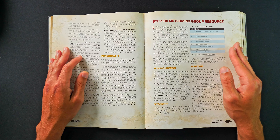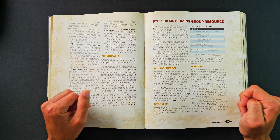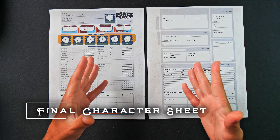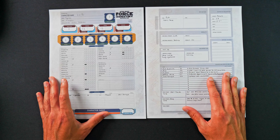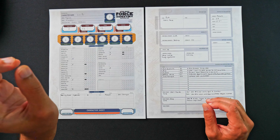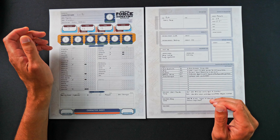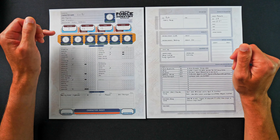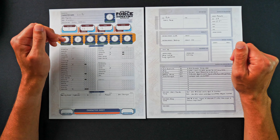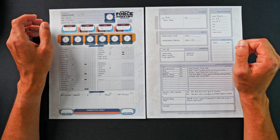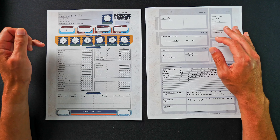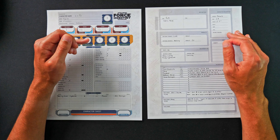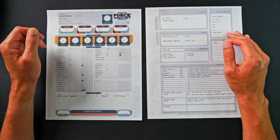That's all there is to creating a character — let's take a look at the character sheet. Here we have the official character sheet for Force and Destiny, just two pages, which is awesome. We have Lin Yule, a Togruta who is a Guardian of the Soresu Defender. Her Force rating is 1, her Soak value is 3, her Wound Threshold is 12, and her Strain Threshold is 12. No defense because we're not wearing any armor. Her Brawn is 2, Agility is 3, Cunning is 3, Willpower is 2, and Presence is 2.